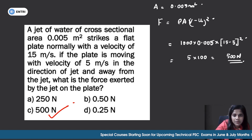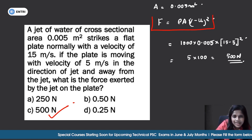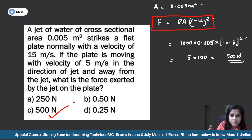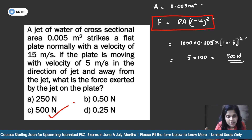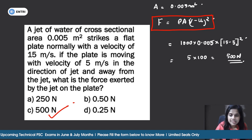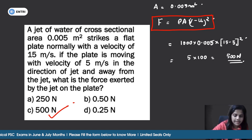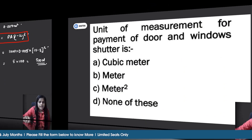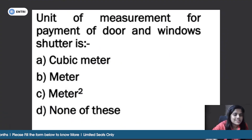When two velocities are mentioned and the plate is moving, we use the relative velocity equation F = ρA(v−u)². This is the key concept for moving plate problems.